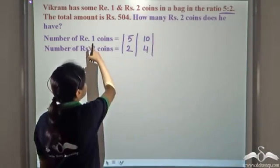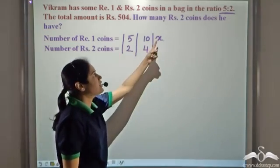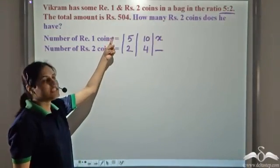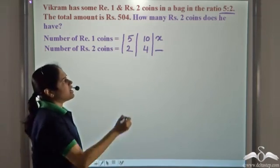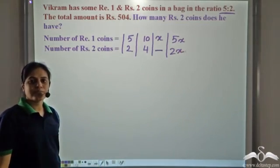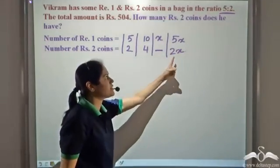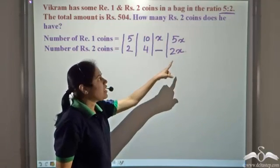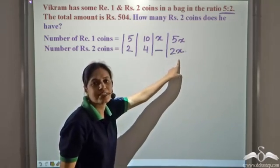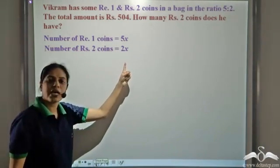So if we represent the number of Rupee 1 coins by x, we have to find a number for Rupee 2 coins such that these two are in the ratio 5 is to 2. A simpler way would be to represent Rupee 1 coins as 5x and Rupee 2 coins as 2x. So we need to find x.